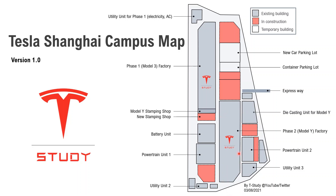This massive building is the phase two building producing Model Y. This one is powertrain unit two. The last one is utility unit three — it's supporting the Model Y factory and a few buildings in this section.